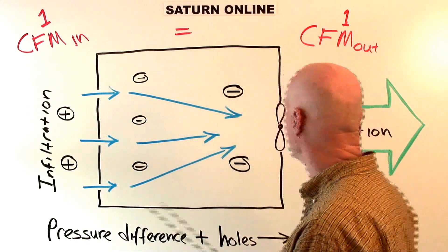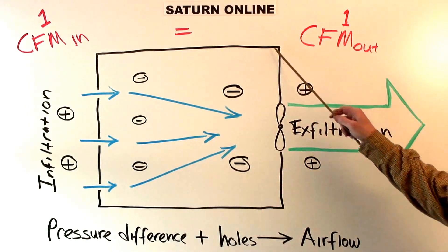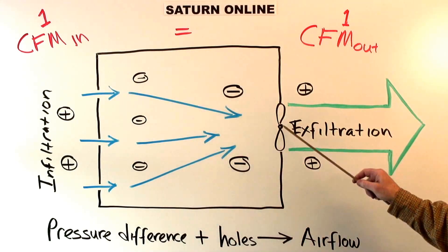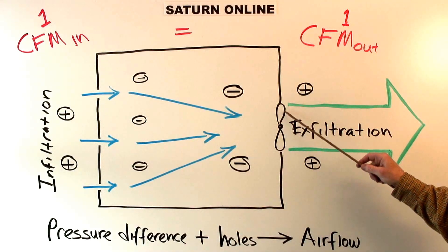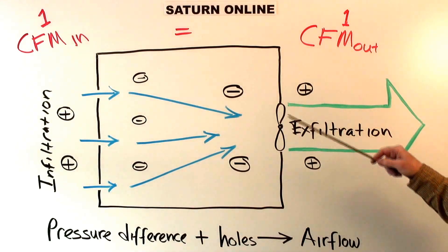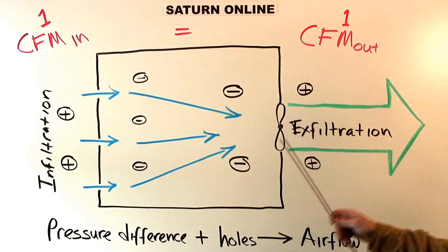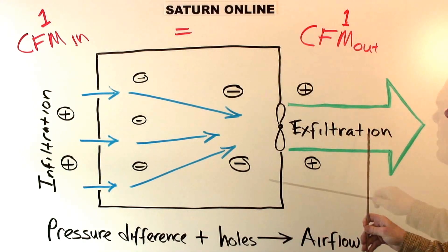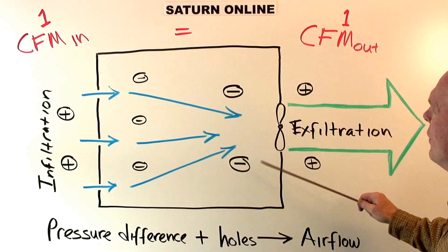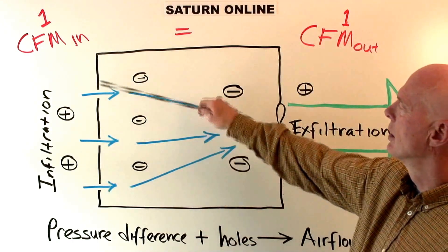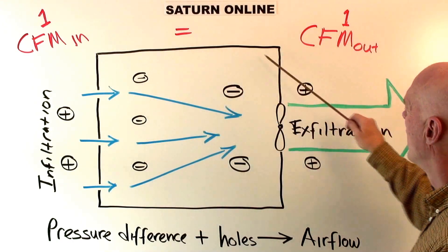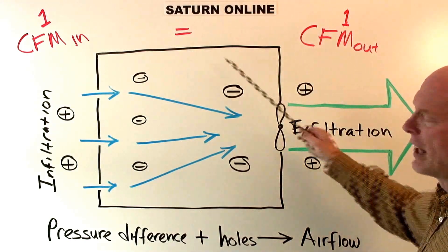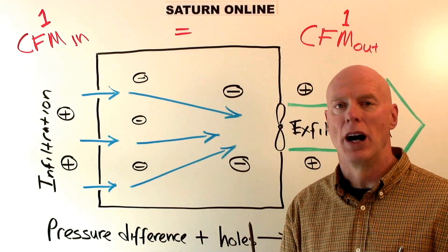So let's say that we have a fan — we have just a large box here, and we have a fan in the box. The minute that fan starts to spin, it sends the air flowing in one direction. If the fan were strong enough and if the box had absolutely no holes in it, then the fan would create a vacuum inside the box.